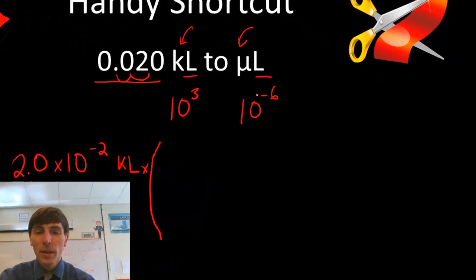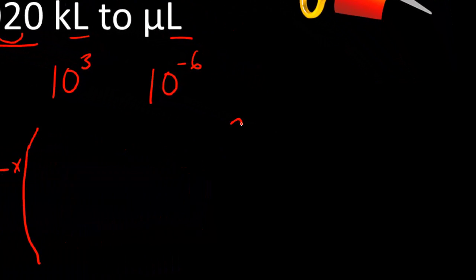To get from kilo to microliters, we're going to take the first power of 10, 3. We're going to subtract the second power of 10. We're just finding the difference between the two.